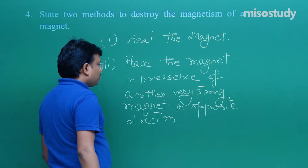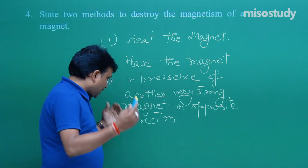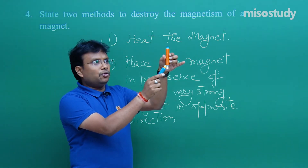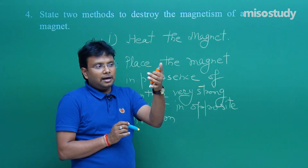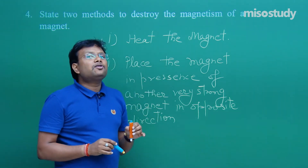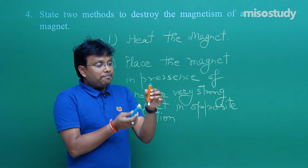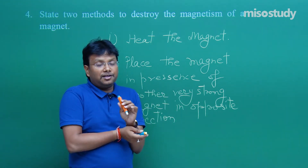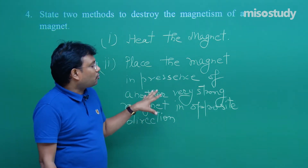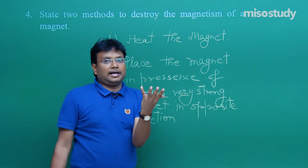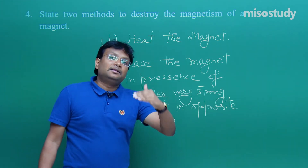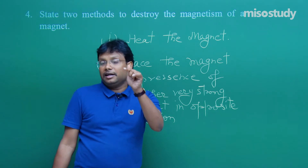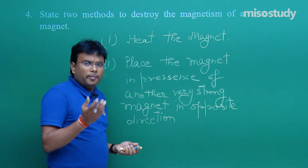The external magnet will first try to demagnetize the small magnet, then force the domains to align themselves as per the direction of the external magnetic field. These are two methods to destroy magnetism; there are many other methods also. These questions are directly from the slides we have discussed, and students who regularly watch the videos will find them very simple.